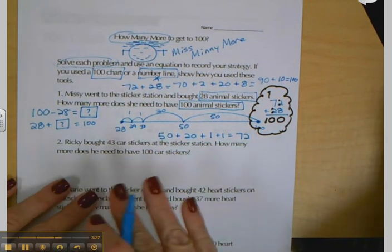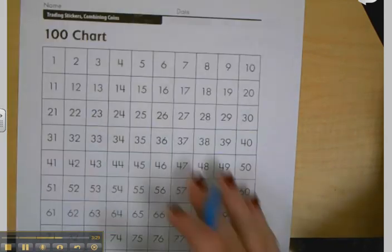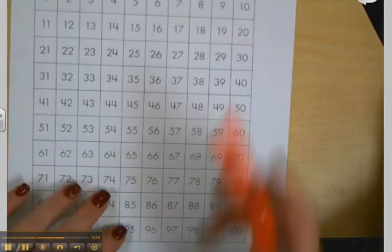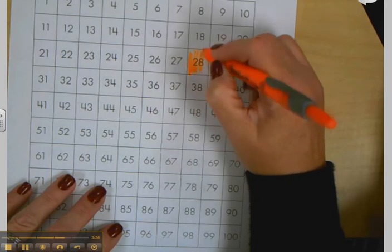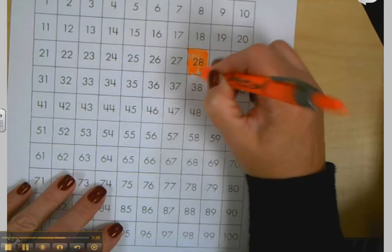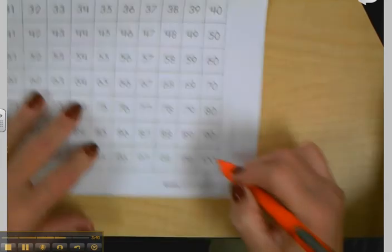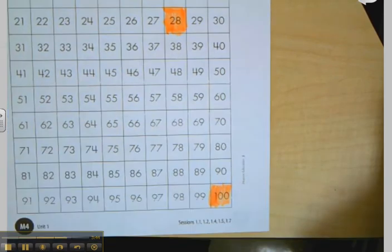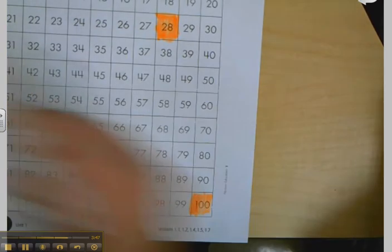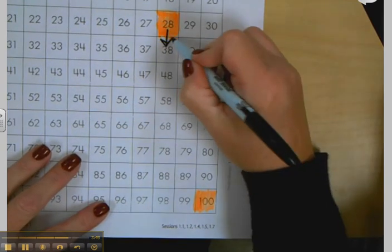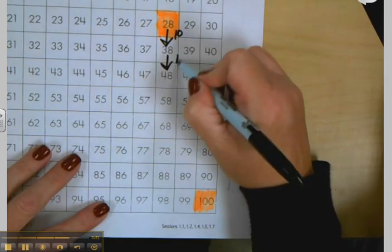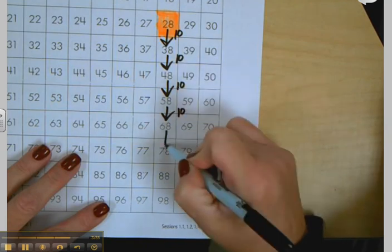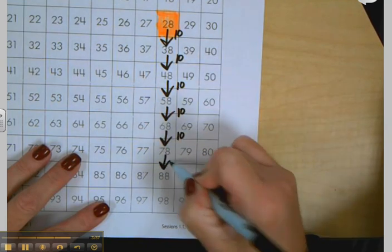All right, so the hundreds chart. I'm going to take the same problem to the hundreds chart. My starter number was 28, so I'm going to get my highlighter and here's my 28. I need to know the difference between 28 and 100, so I'm going to put my two markings right there. Now I'm going to do my travels on the hundreds chart. I'm going to go down one, that's 10, down another, that's 10, down another, that's 10. I'm going to keep on going just like this, hopping 10 at a time on my number line.